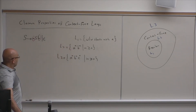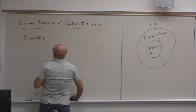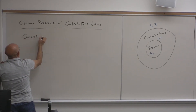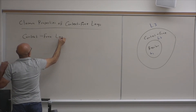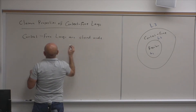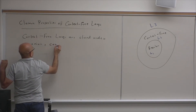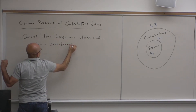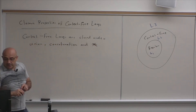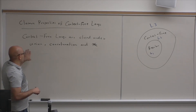There are languages that are not context-free. But context-free languages are closed under union, concatenation, and star. In fact, this is easy to show — it's easy to show that context-free languages are closed under these three operations.